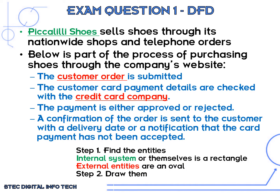Our first step is to find any entities in this question. I'm going to color them in green for any internal systems and red for any external entities. Pick a Lily Shoes is obviously an entity — they are the main system, the main business in this scenario. The customer order is submitted, so there is a customer as an entity. We've also got a credit card company as another entity, giving us three entities: Pick a Lily Shoes, the customer, and the credit card company.